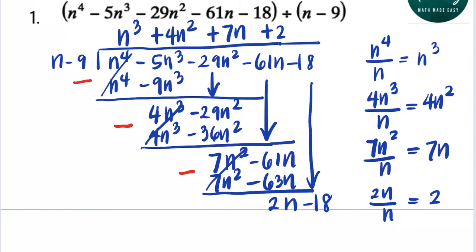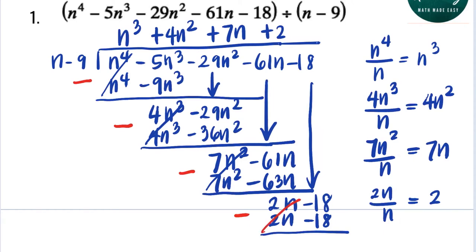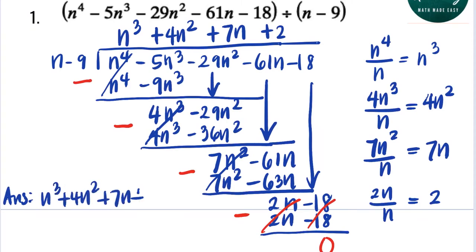Now we multiply n minus 9 by 2: n times 2 is 2n, and negative 9 times 2 is negative 18. We subtract: 2n minus 2n is 0, and negative 18 minus negative 18 is also 0. So there is no remainder, and the answer is n cubed plus 4n squared plus 7n plus 2.